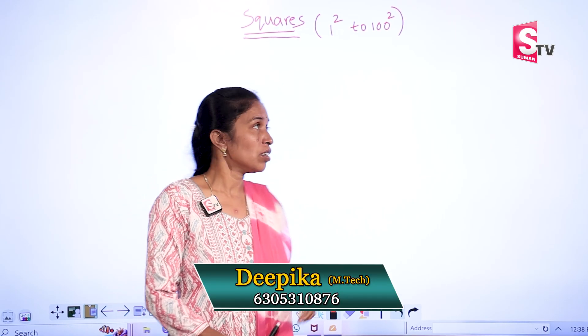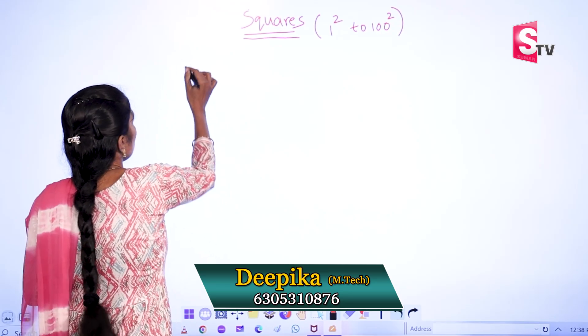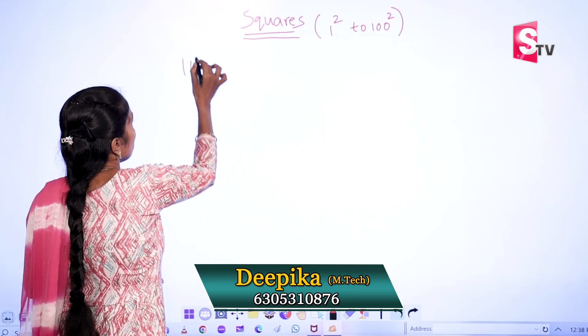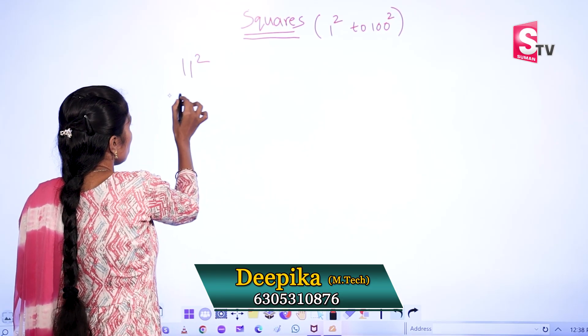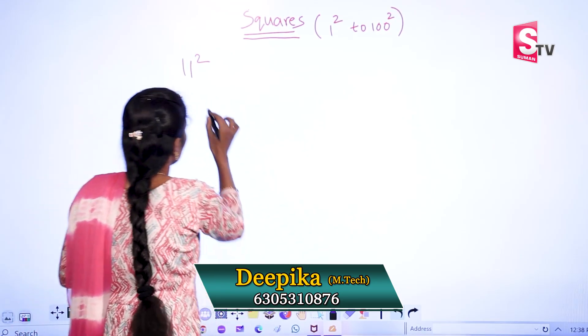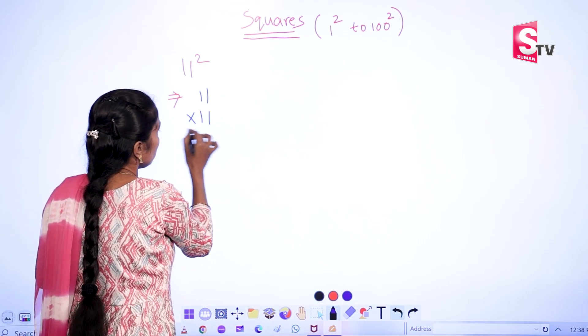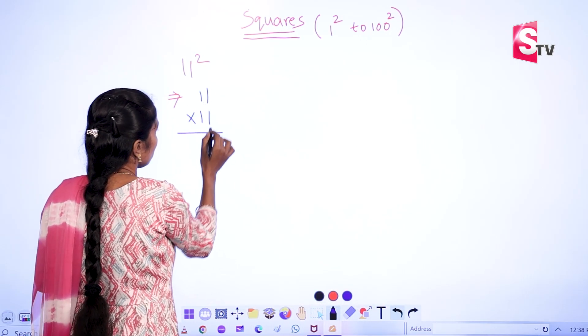Now I have a traditional method. See here, in the traditional method, 11 square — how can we solve this problem? 11 square means 11 into 11. This is the traditional method.